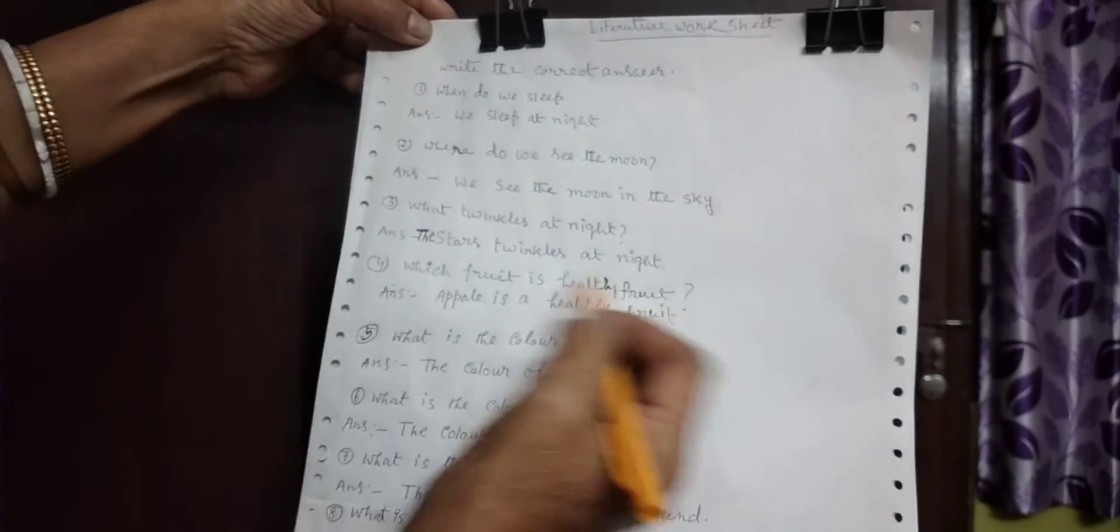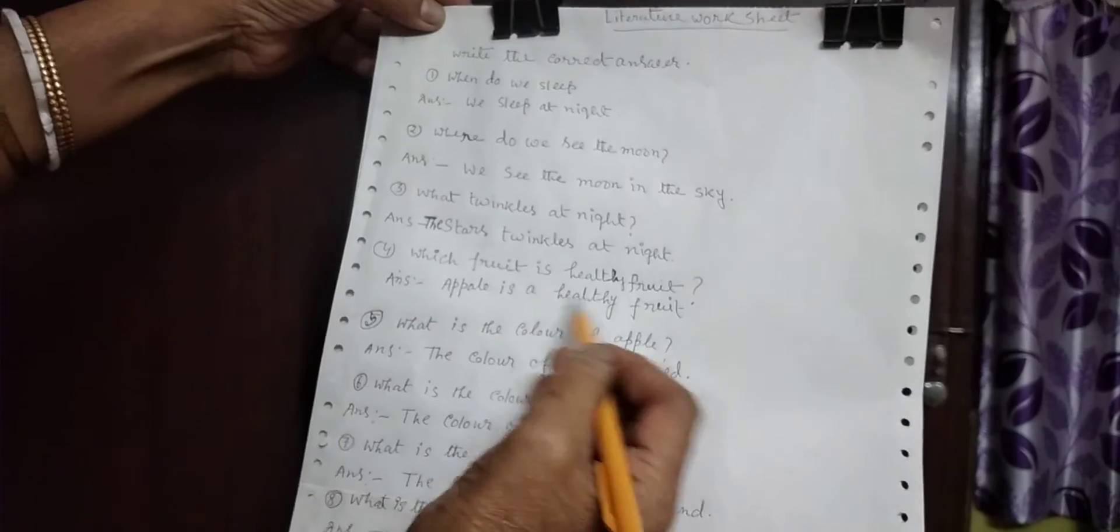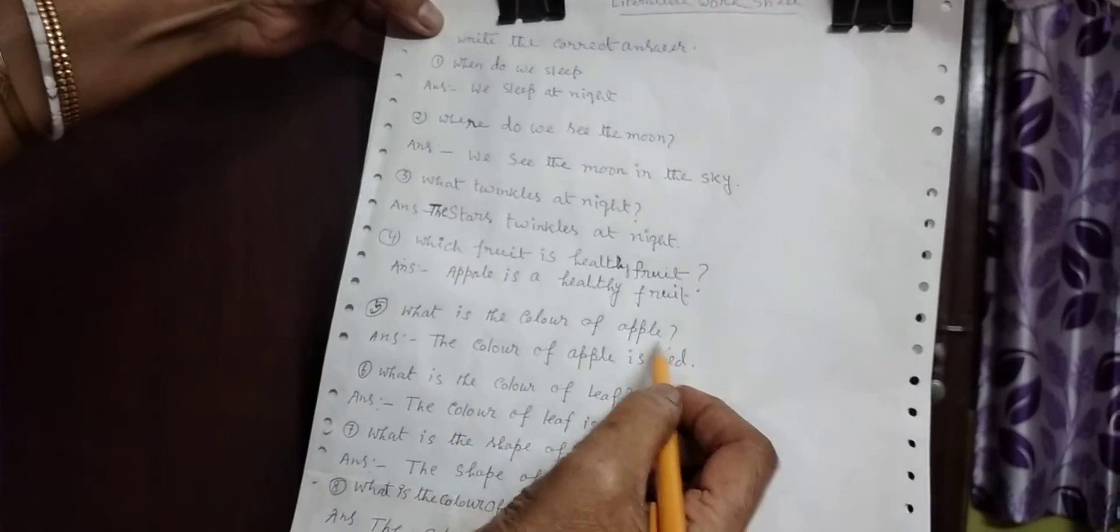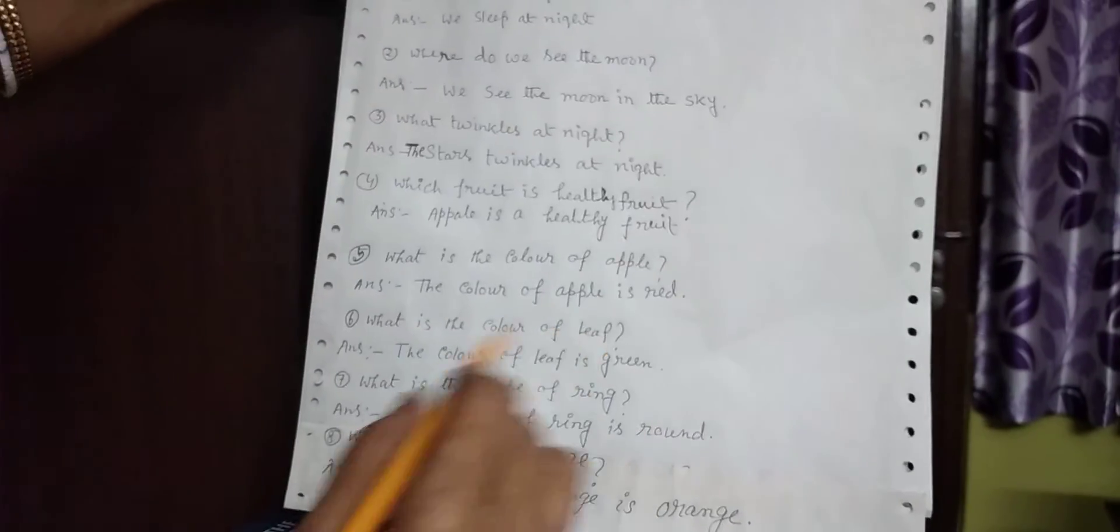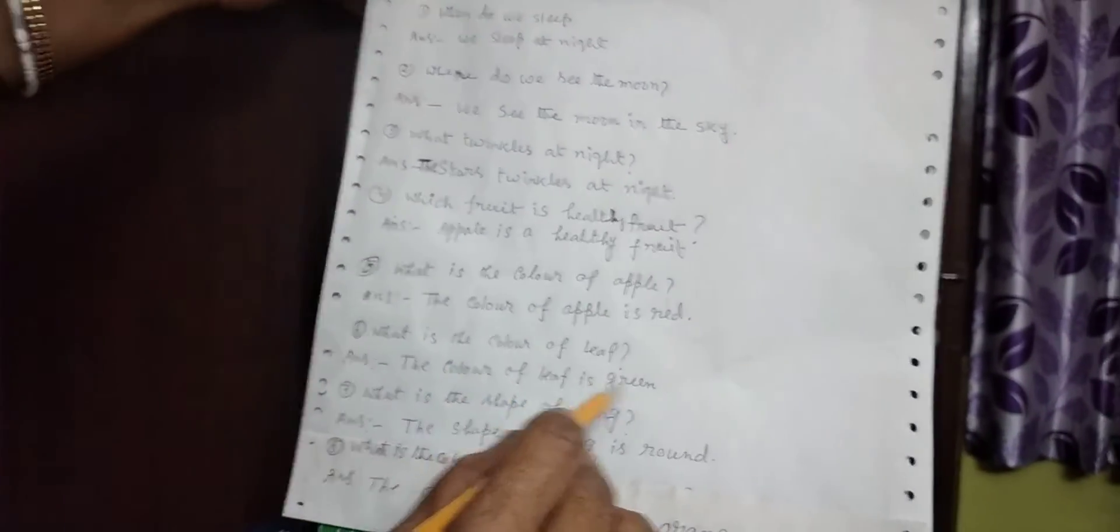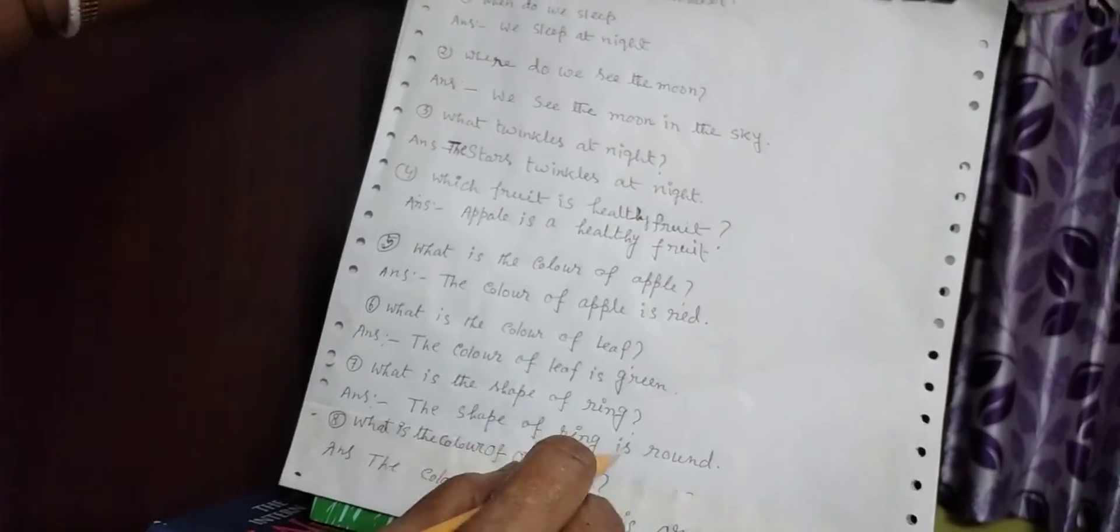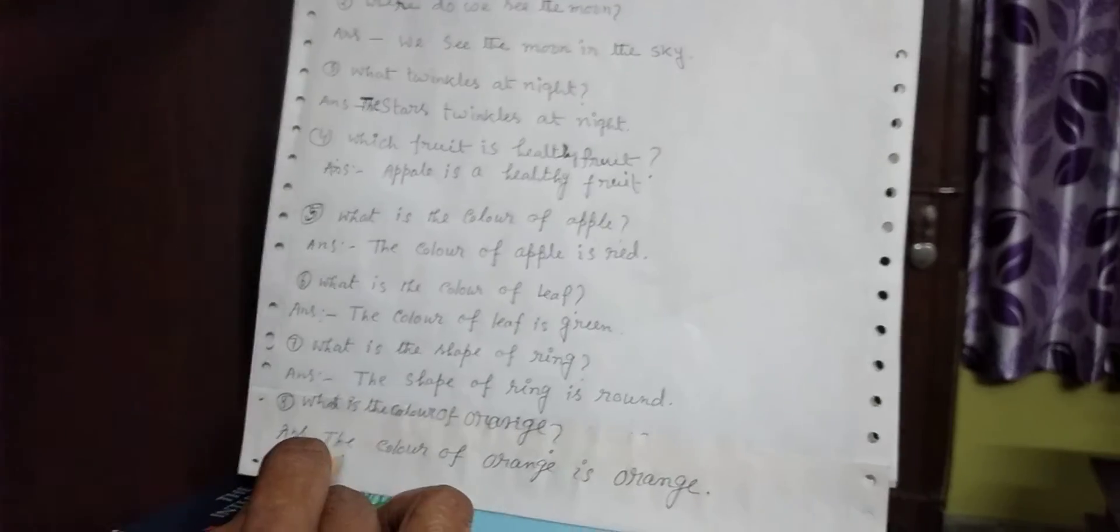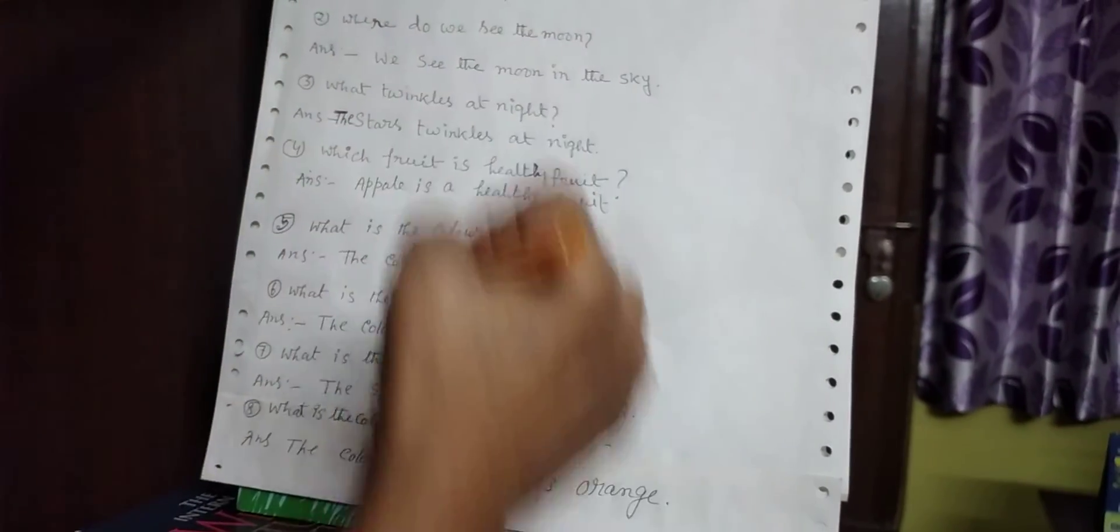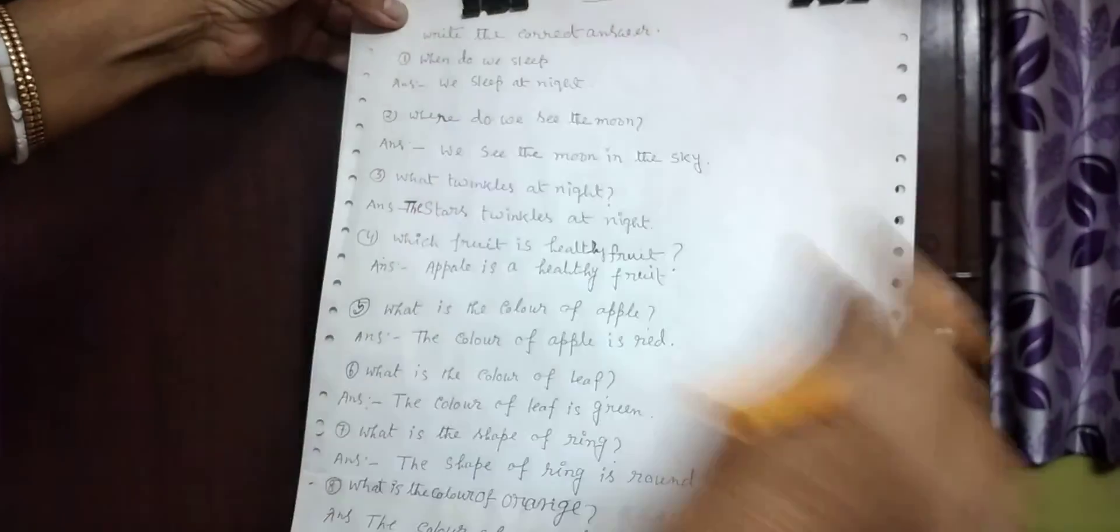The stars twinkle at night. Which fruit is a healthy fruit? Apple is a healthy fruit. What is the color of apple? The color of apple is red. What is the color of leaf? The color of leaf is green. What is the shape of ring? The shape of ring is round. What is the color of orange? The color of orange is orange. Students, very carefully look at the sheet. It is read and learn at home.